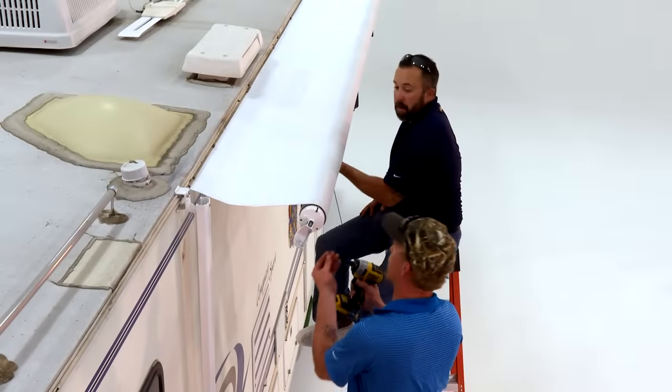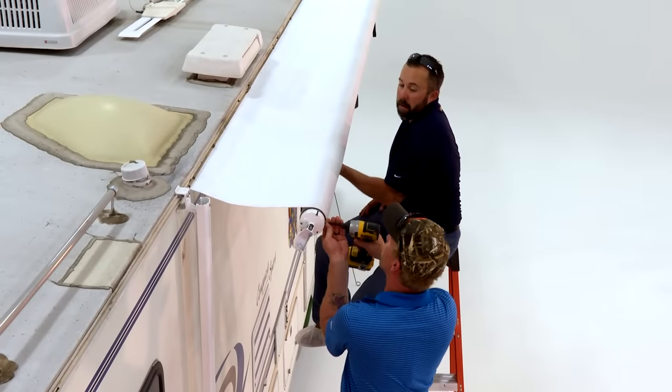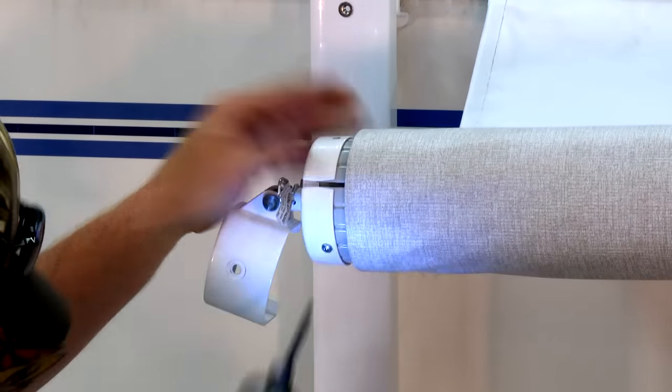With the number two square head bit, reattach the end cap to the roll tube using the three screws you previously removed.